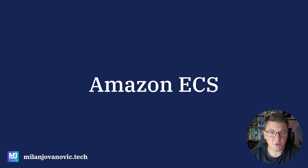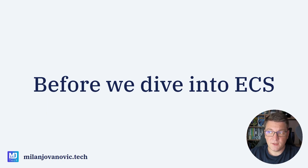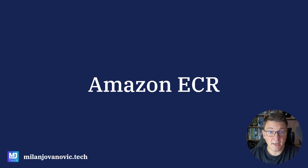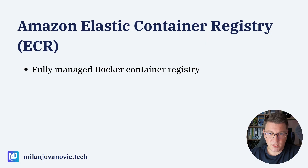Our final goal is to run our .NET application inside of Amazon ECS. ECS stands for Elastic Container Service, and it is one of the core services in AWS for working with Docker containers. But before we dive into ECS, we have to somehow push and store our Docker containers in AWS. This is where another AWS service comes in, called Amazon ECR. ECR stands for Elastic Container Registry, and here are some of the things that you get using Amazon's ECR service. You get a fully managed Docker Container Registry that you can use to publish, version, and in general manage your Docker containers.